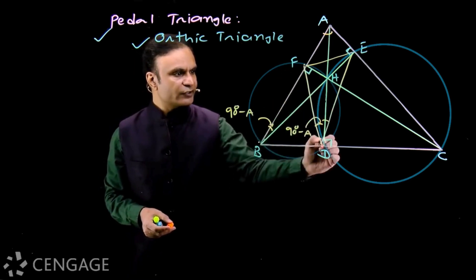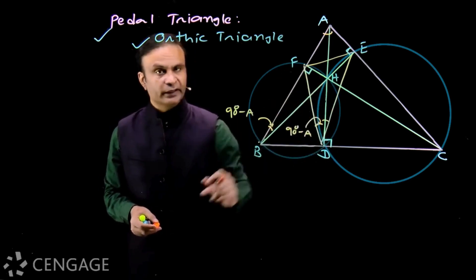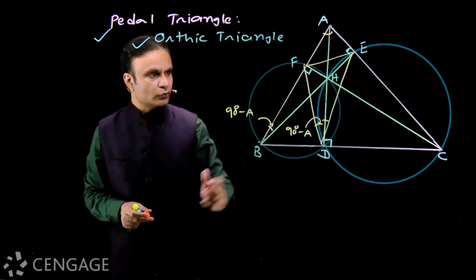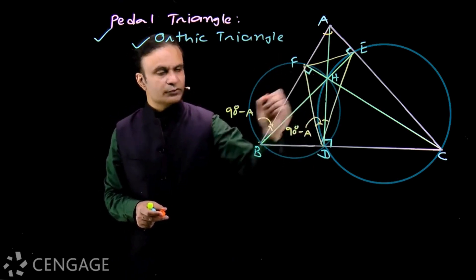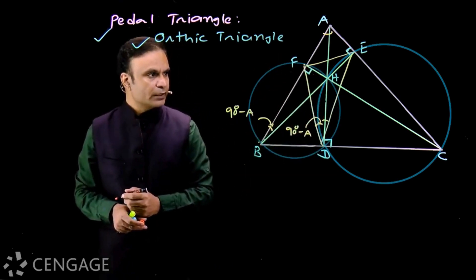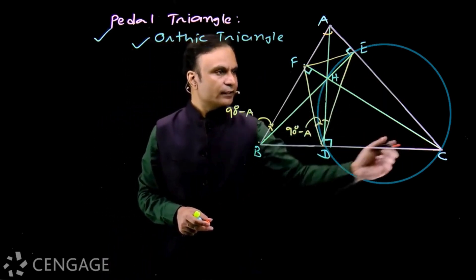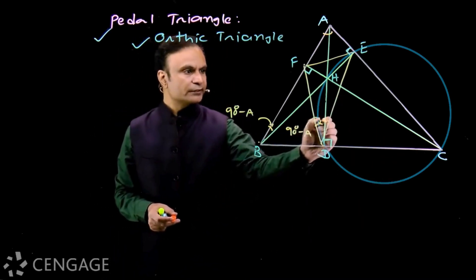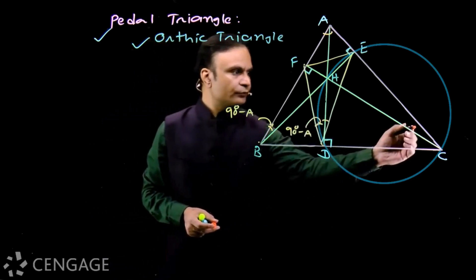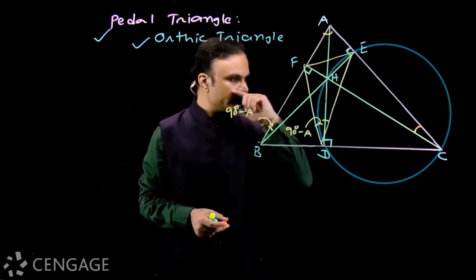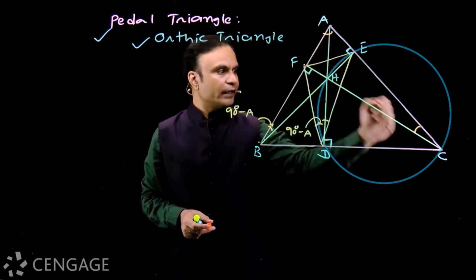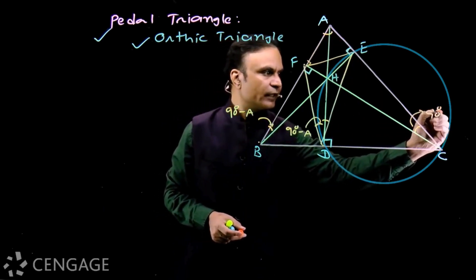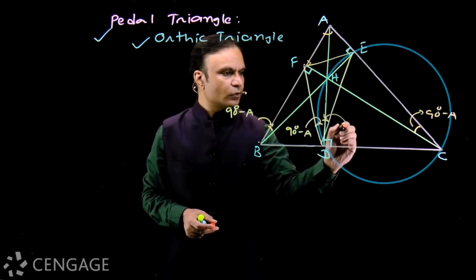Since B, F, H, D are concyclic and BH subtends right angles at F and D, BH is the diameter. Similarly, points D, H, E, C are concyclic with HC as diameter. The angle at E in this circle equals the angle from triangle AFC: that angle is 90°, and with angle A, the remaining angle is 90° − A, so this angle is also 90° − A.